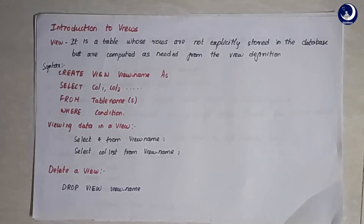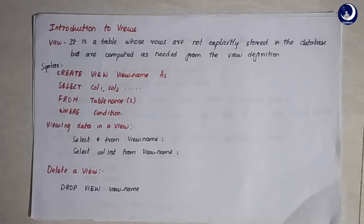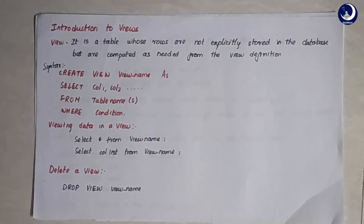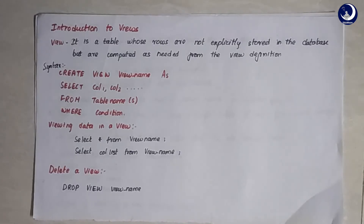A good example would be students being given the final result, but not being given access to view the internal and external marks. That can be an example of a view where you will only be allowed to see the data that is intended for you. It hides the complexity behind it — data that is not accessible to you. These are the uses and the main reason for using a view.